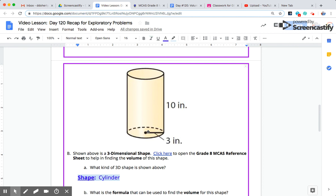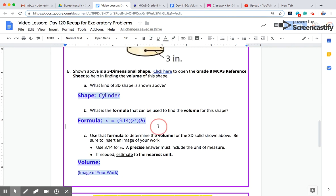So hopefully you saw here the radius. We look at the circular base. The distance halfway across is the radius. The radius is 3 inches. The height, the distance connecting the two circular bases is 10 inches.